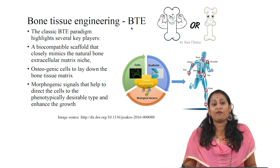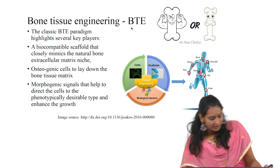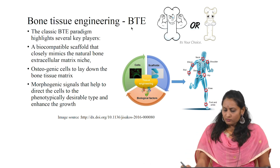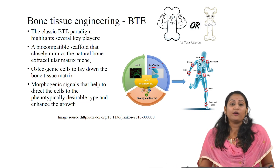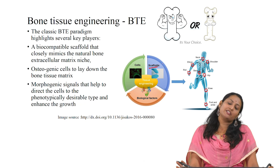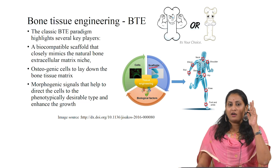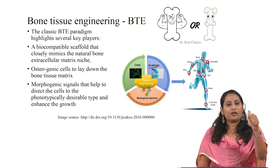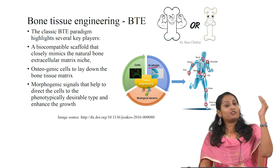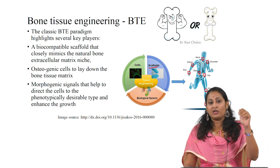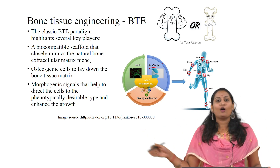The key players are the three major components of the tissue engineering triad. The first one is a biocompatible scaffold — a 3D structure that closely mimics the extracellular matrix. The second component is osteogenic cells, which lay down the bone tissue matrix. There are 4 different types of cells in bone: osteoblast cells, osteocytes, osteogenic cells, and osteoclast cells. Osteoblasts are responsible for the formation of bone, osteoclasts for bone resorption, and osteogenic cells are the only bone cells that can divide and differentiate into osteoblast cells.